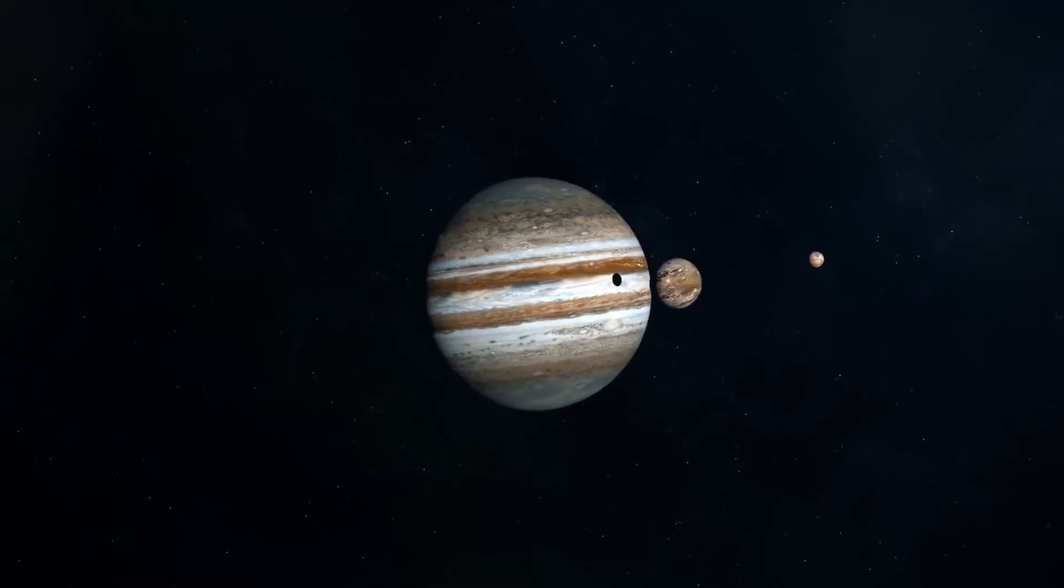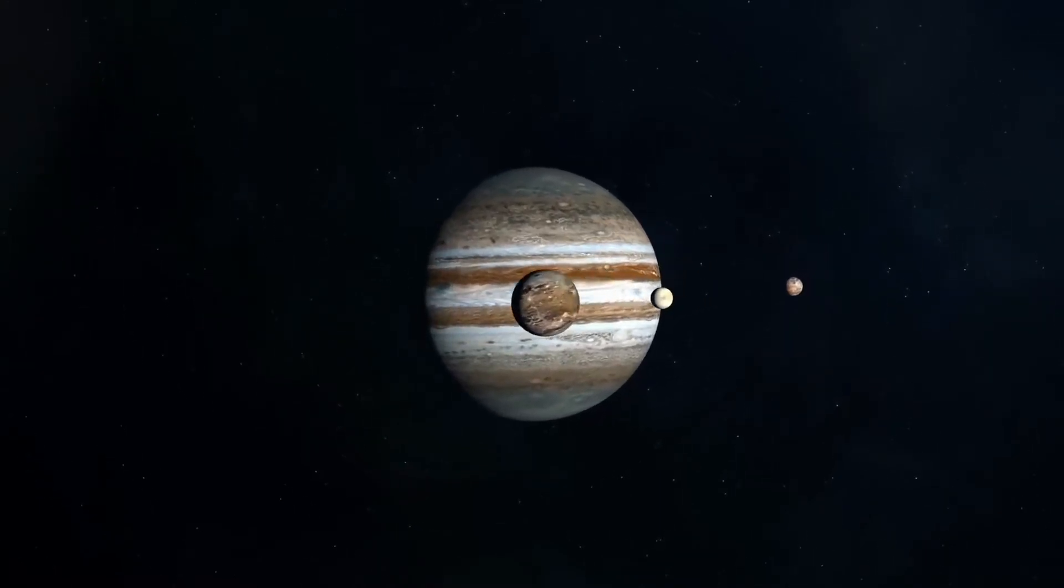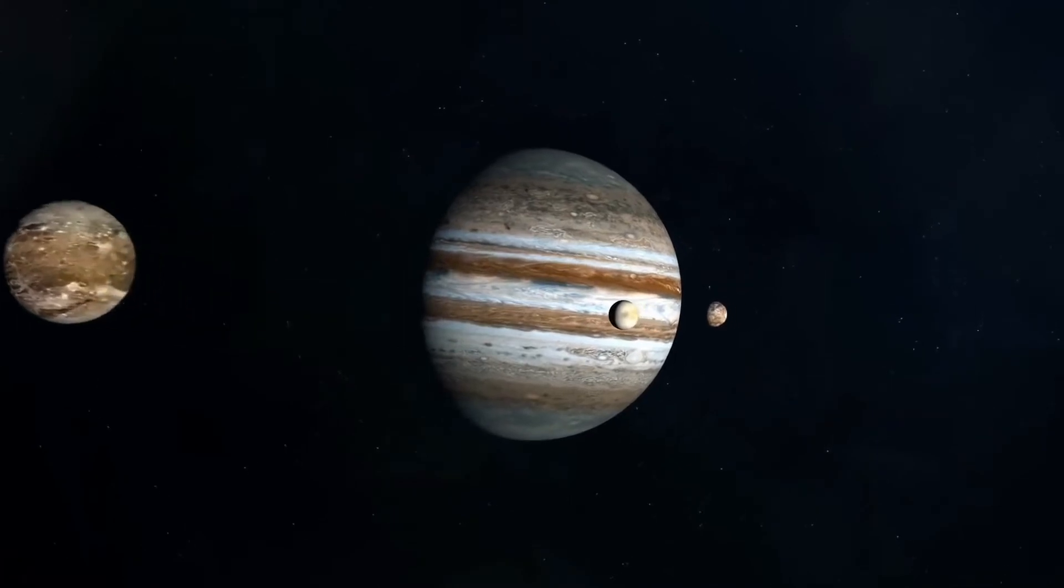It also discovered three new satellites of the gas giant: Atlas, Prometheus, and Pandora. This is how we found that the planet's rings were in line because of these three moons. Voyager 1 also found out that Saturn's rings were covered in ice, unlike Jupiter's rings.